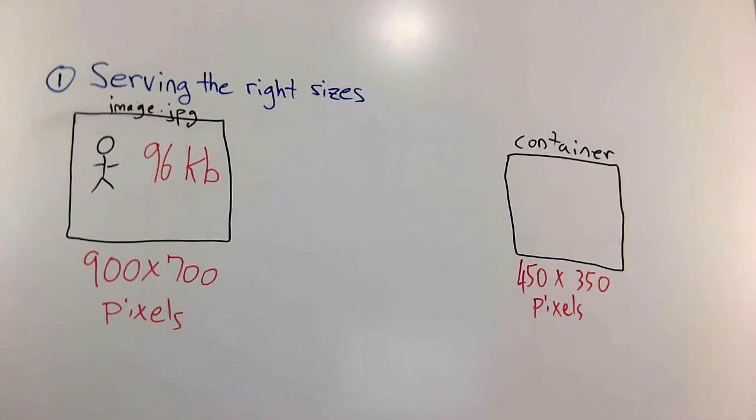I'm going to show you how big of an impact optimizing images can really have. In the first example, which we're going to talk about serving the right size images, we have a typical use case where we have an image that maybe we uploaded or found online. This image is 900 by 700 pixels, and it's 96 kilobytes.